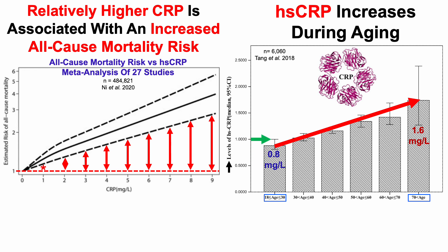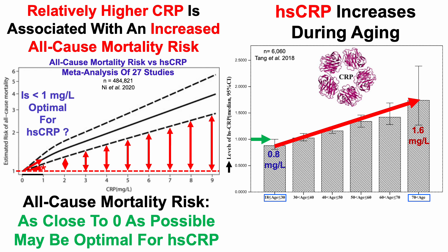In youth, the upper limit of the range for CRP is about 1 mg per liter, which raises the question: is less than 1 mg per liter optimal for HSCRP? Going back to the all-cause mortality plot, more specifically within the 0 to 1 mg per liter range, HSCRP does indeed increase above 0 up until the 1 mg per liter range, and that's a significant increase — both dashed black lines are completely above 1. In other words, for all-cause mortality risk, as close to 0 as possible may be optimal for HSCRP.